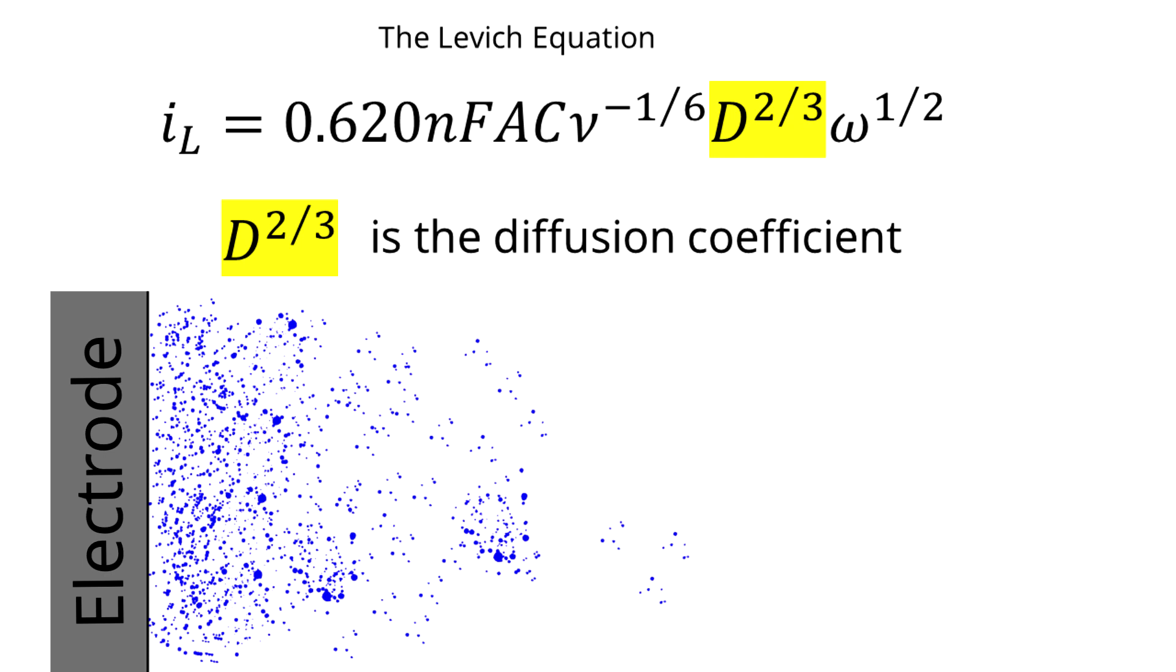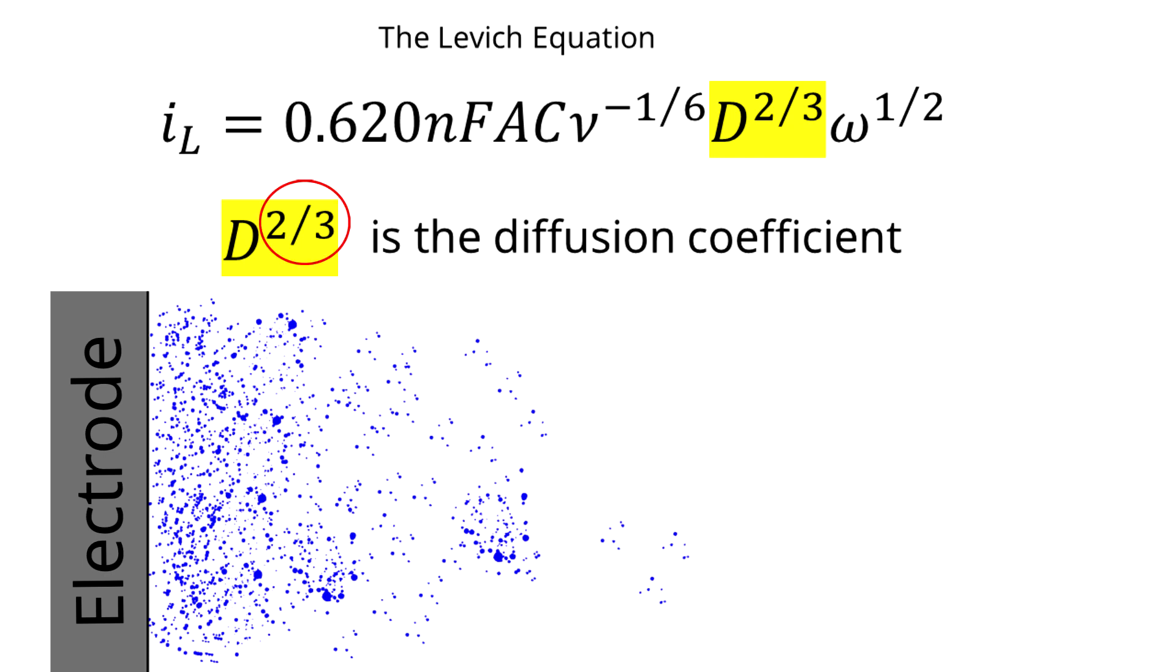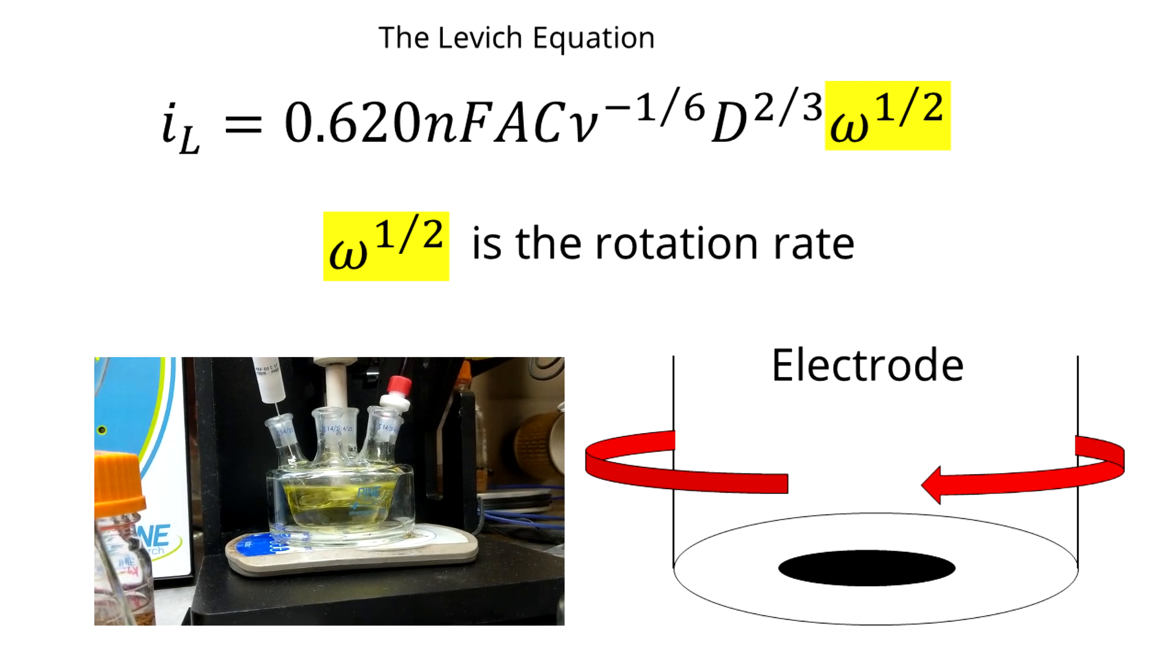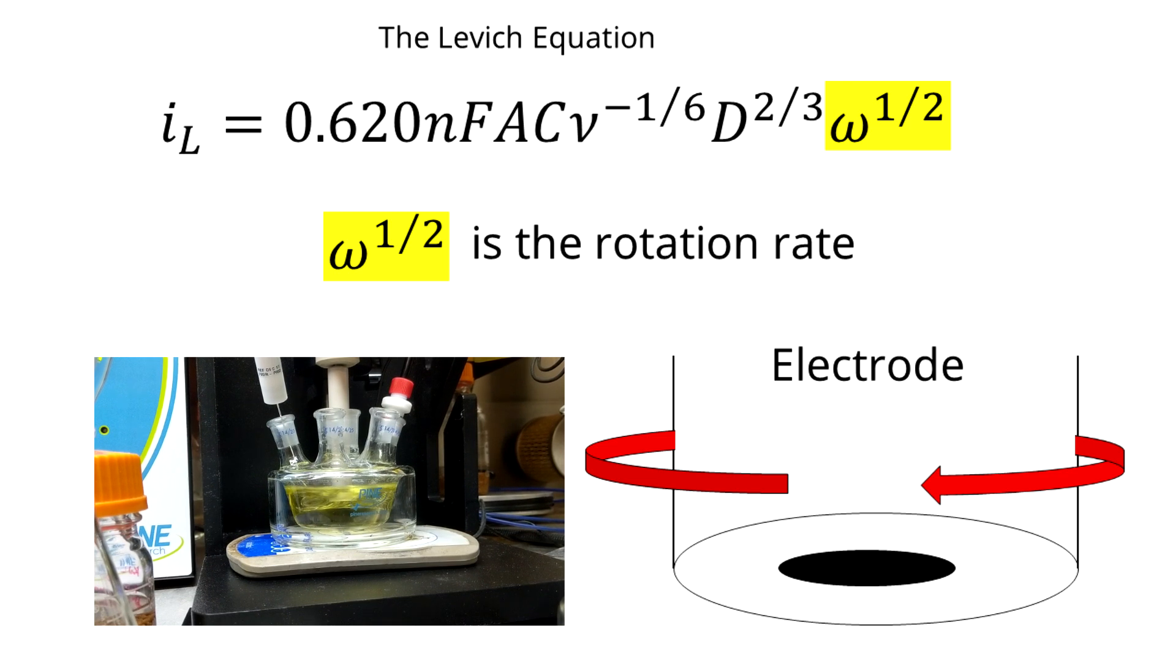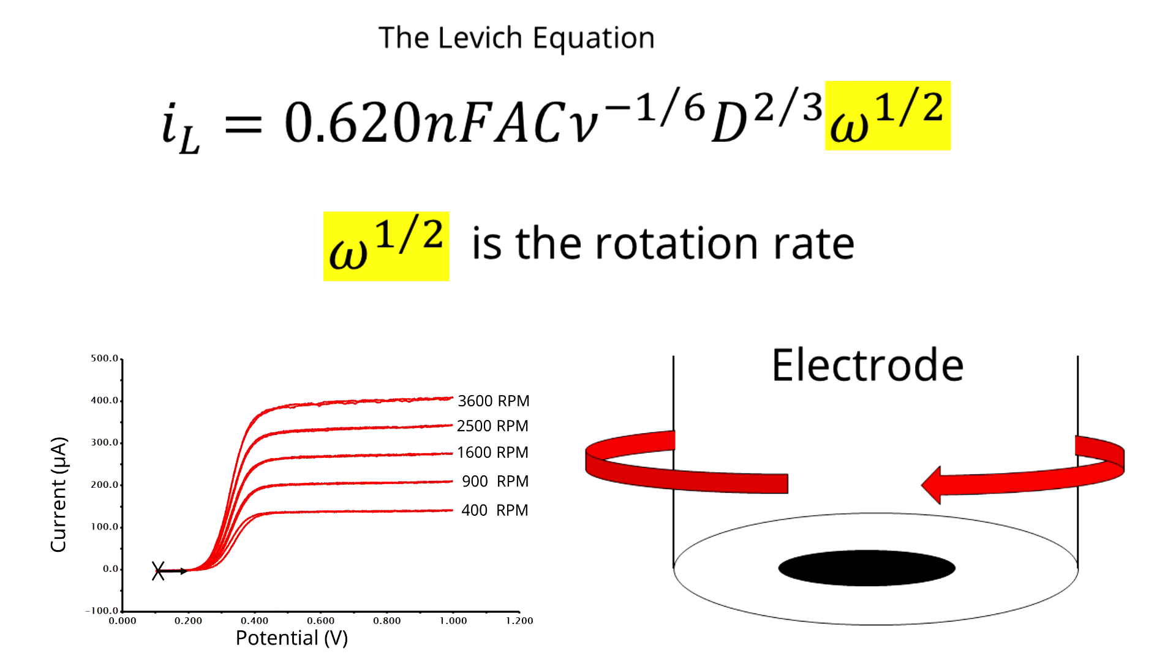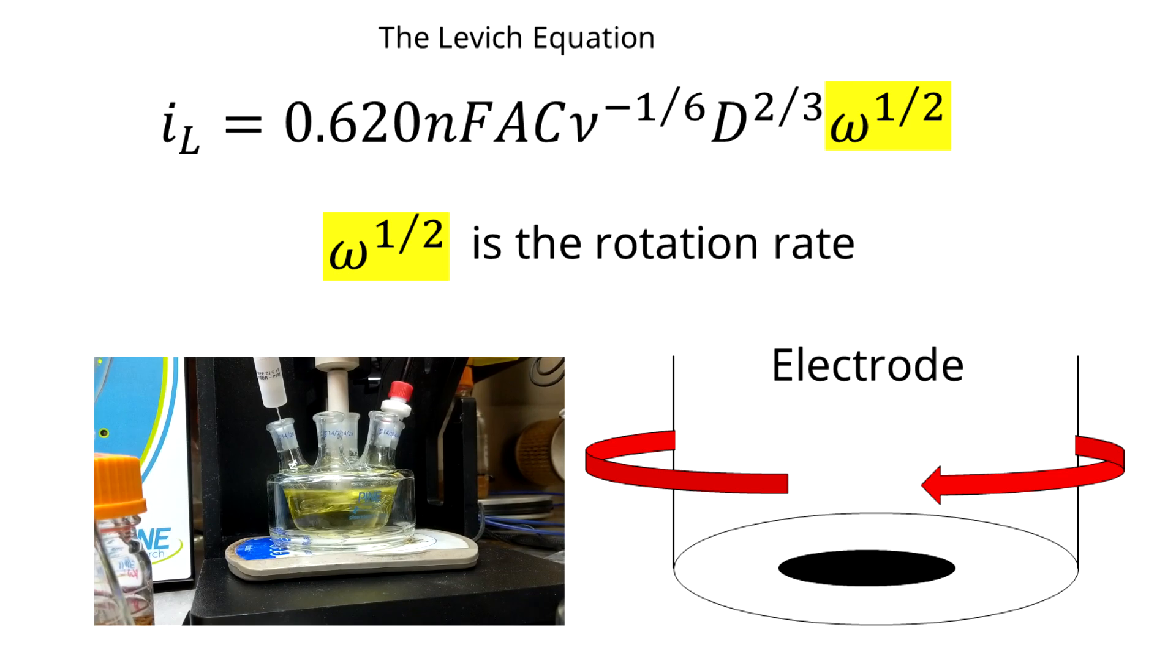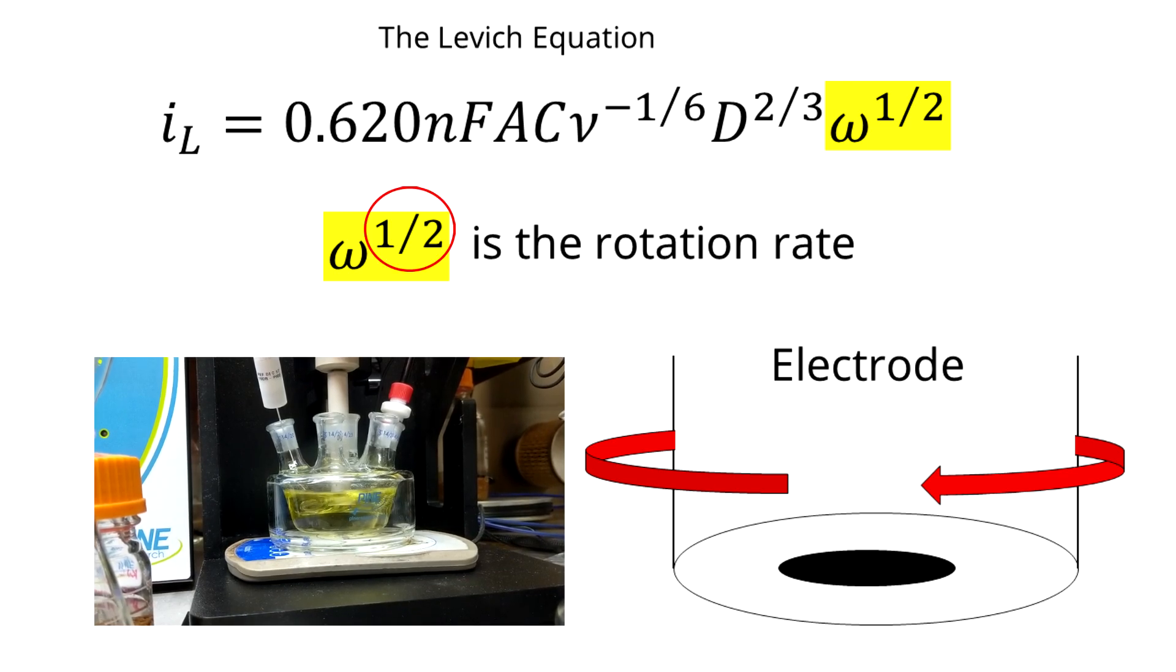D is the diffusion coefficient, and that's what we're ultimately solving for. It is raised to the two-thirds power. And lastly, we have ω, which is the angular rotation rate. It's how fast our electrode is rotating. Each limiting current value we collected was recorded at a different rotation rate. ω is raised to the one-half power.